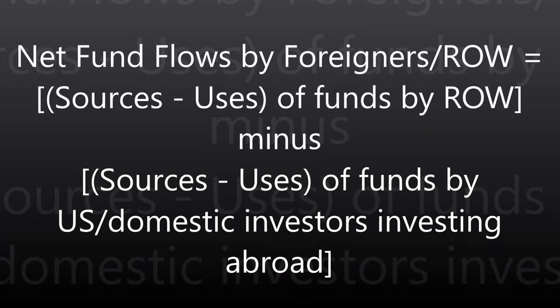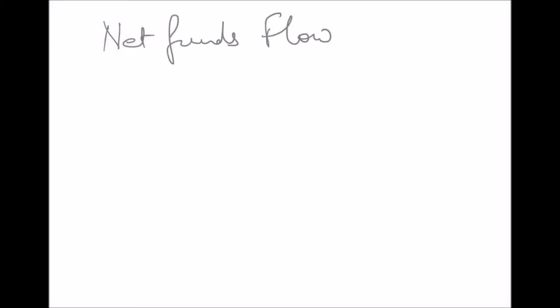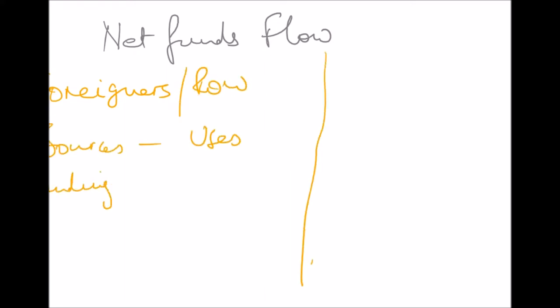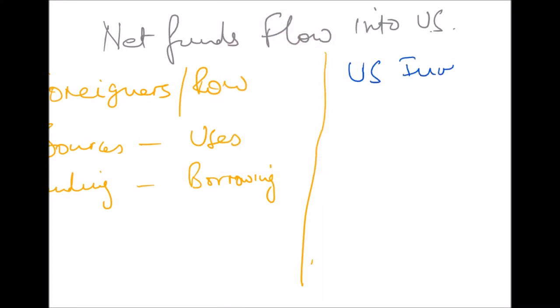The net fund flow by foreigners equals the sources minus the uses by foreigners, minus the sources minus the uses by US or domestic investors. An increase in the net flow by foreigners increases the supply of funds in the US markets, causing a shift in the supply curve to the right and lowering the interest rate. Any decrease in net flows by foreigners decreases the supply, causing interest rates to rise.